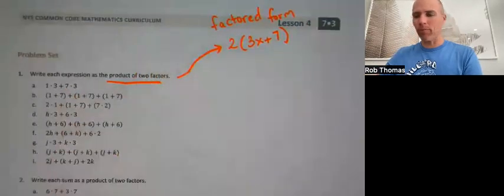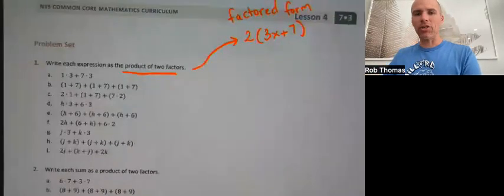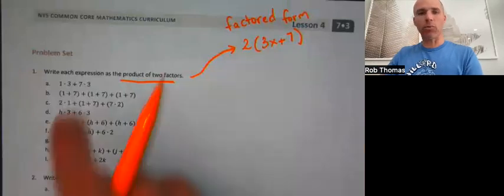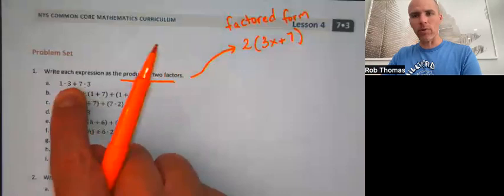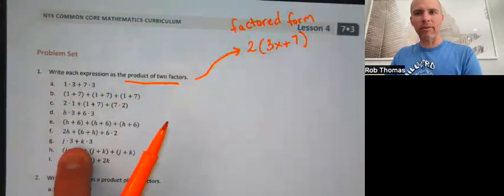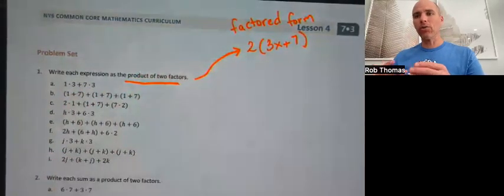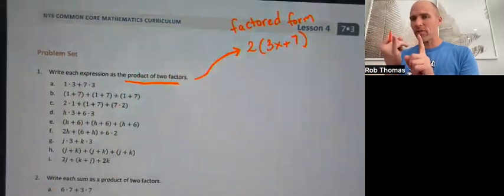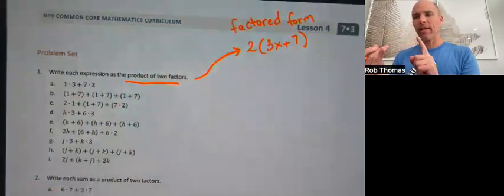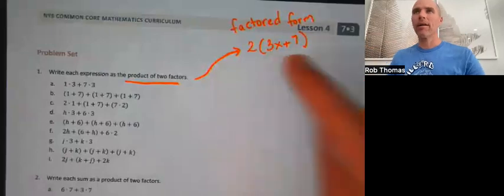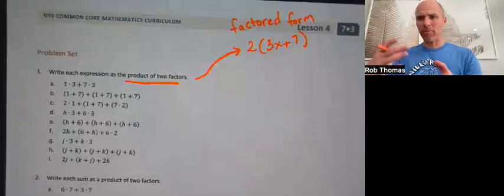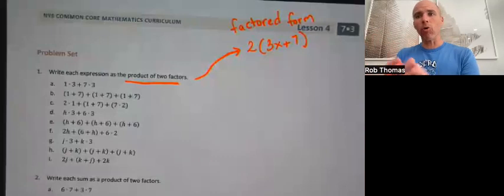Our goal for these top two categories is to rewrite all of these expressions — whether they're strictly numerical (only numbers) or ones that have variables as well — using factoring and grouping to make them look like a factored form. We might also have to combine some like terms before we group or factor. Some of these get really tricky.